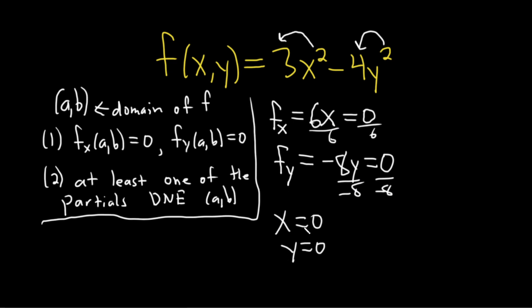So the only thing left to check is to make sure that this ordered pair (0, 0) is in the domain of the original function. In this case, it is. Right? It is in the domain because if you plug it in, you get a result. And so, yeah, that would be the critical point. I hope this video has been helpful. Good luck.